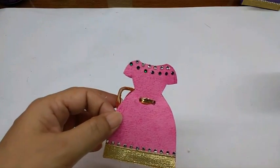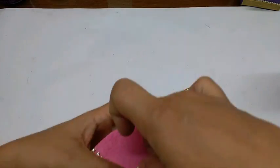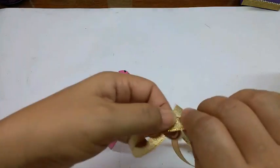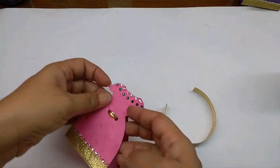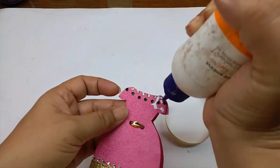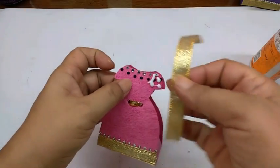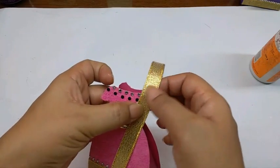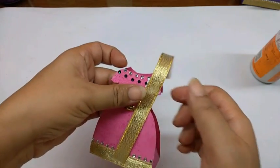Now just take the golden ribbon, the dull one again, and measure it on one side of the box like this and cut this piece out. Now I am just going to apply glue on the shoulder on both sides and stick the tape slightly at an angle and let it dry.